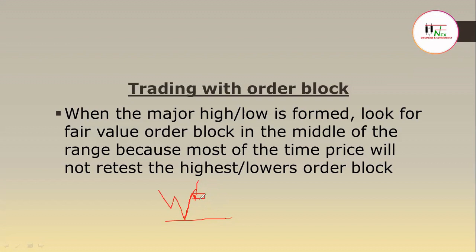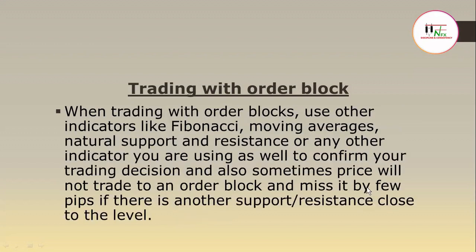For those trading market maker methods, level two most of the time will form like this, so you'll be looking for price to retrade back to this order block. When trading with order blocks, use other indicators like Fibonacci, moving averages, natural support and resistance, or any other indicator you are using to confirm your trading decisions. Also, sometimes price will not trade to an order block and miss it by a few pips. If there is another support and resistance like Fibonacci, natural support and resistance, or moving averages, you can take that trade.